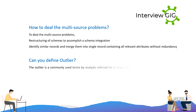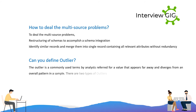Can you define an outlier? An outlier is a commonly used term by analysts referring to a value that appears far away and diverges from an overall pattern in a sample. There are two types of outliers: univariate and multivariate.